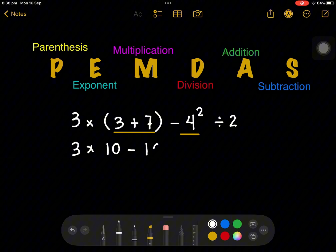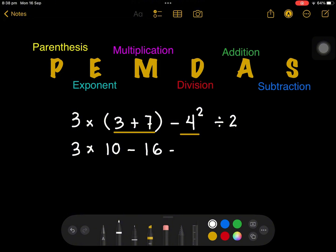Divided by 2. And after that, we have to follow the multiplication as well as the division. So 3 times 10 and 16 divided by 2. So remember, multiplication and division will go together. It doesn't matter which comes first. So 3 times 10 is 30, minus 16 divided by 2 is 8.